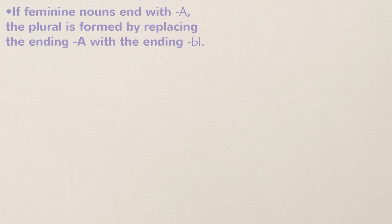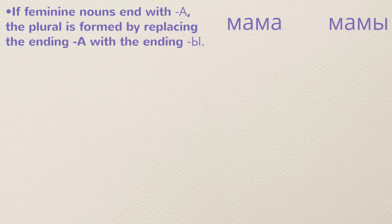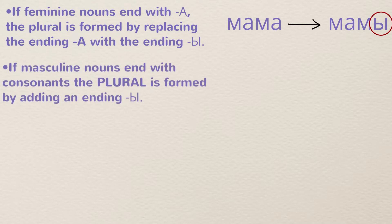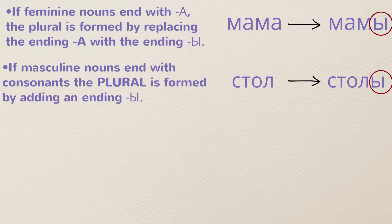How do you know which ending to use? It depends on the ending of the noun in the nominative case — the nominative case is the first case. If a feminine word ends with А in singular, like 'mama' (мама), then the plural is formed with the hard У ending: мамы. We replace the А ending with У. If a masculine noun ends with a consonant, like 'stol' (стол), the ending is also hard У: столы. Because it ends with a consonant, we simply add У next to it rather than replacing anything.